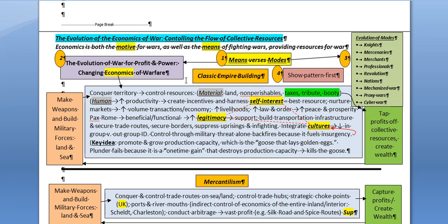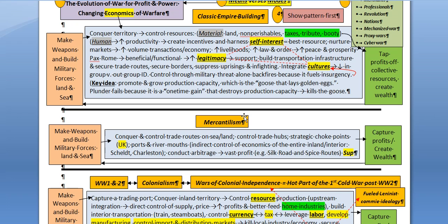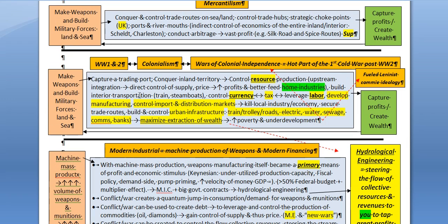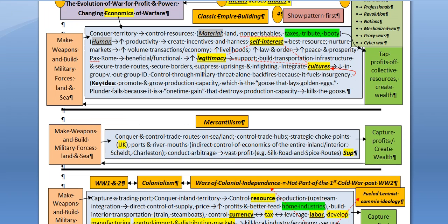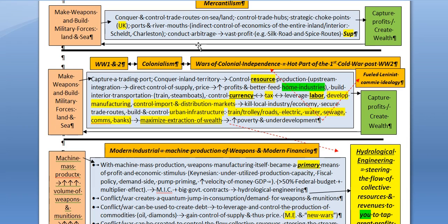This evolution went through four different stages: from classic empire building, to the mercantilist era, through the colonialist era, and finally modern industrial machine production of weapons. Through this progressive development, there was a key change with the Industrial Revolution — a fundamental sea change in how things are produced. In the industrial era, things are produced by machines.